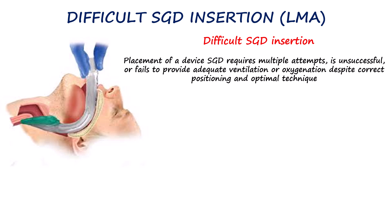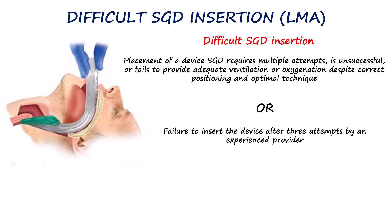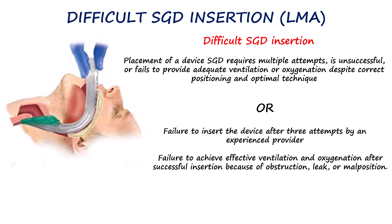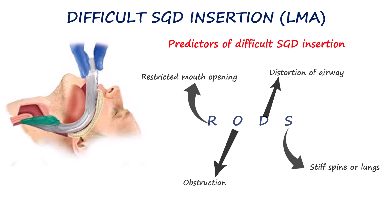Some authors refine this further, describing it as failure to insert the device after three attempts by an experienced provider, or failure to achieve effective ventilation and oxygenation after successful insertion because of obstruction, leak, or malposition. The RODS mnemonic helps predict difficult supraglottic device insertion: Restricted mouth opening can make placement challenging, while Obstruction from swelling or masses may interfere with device function. Distorted anatomy can make correct positioning difficult, and Stiff lungs may cause high airway pressures in patients with chronic pulmonary disease or obesity. A stiff spine, such as with a cervical collar, can further limit movement and complicate insertion.